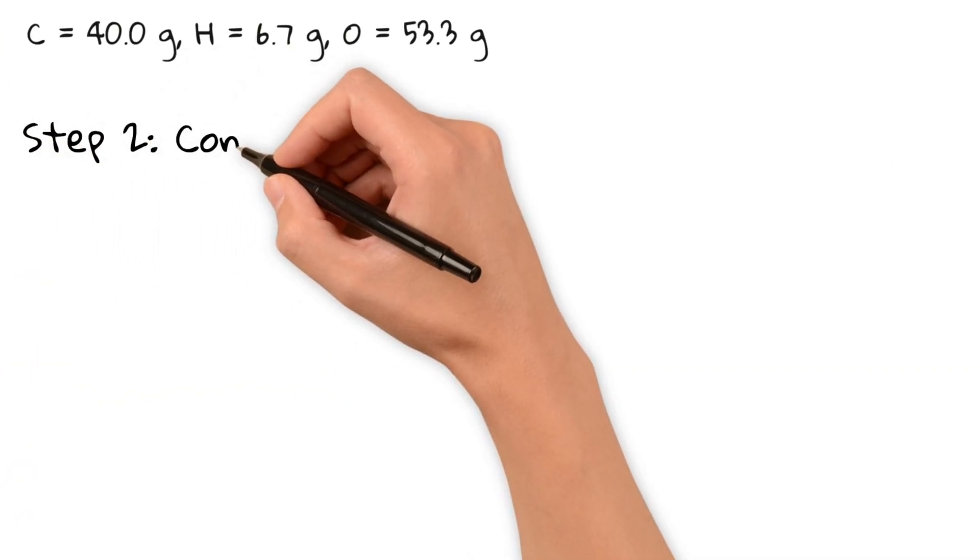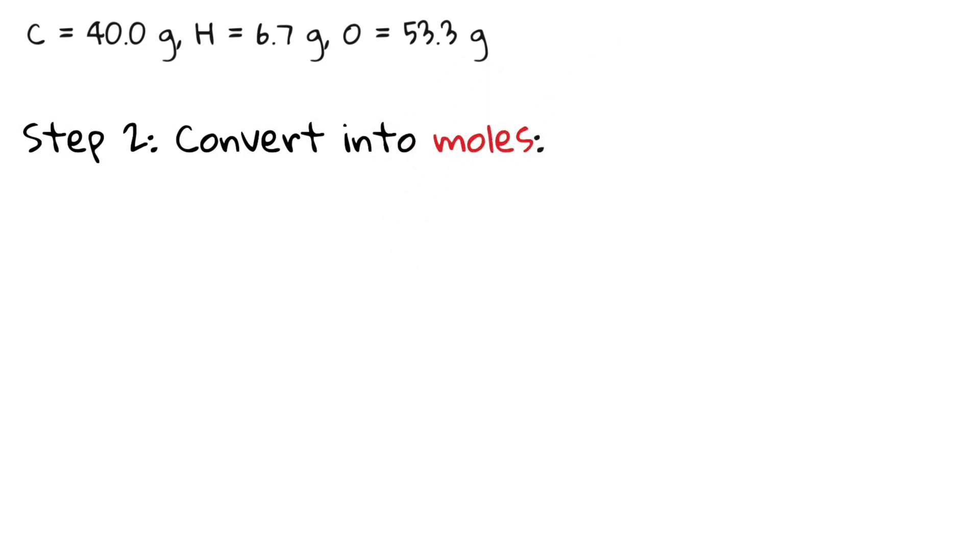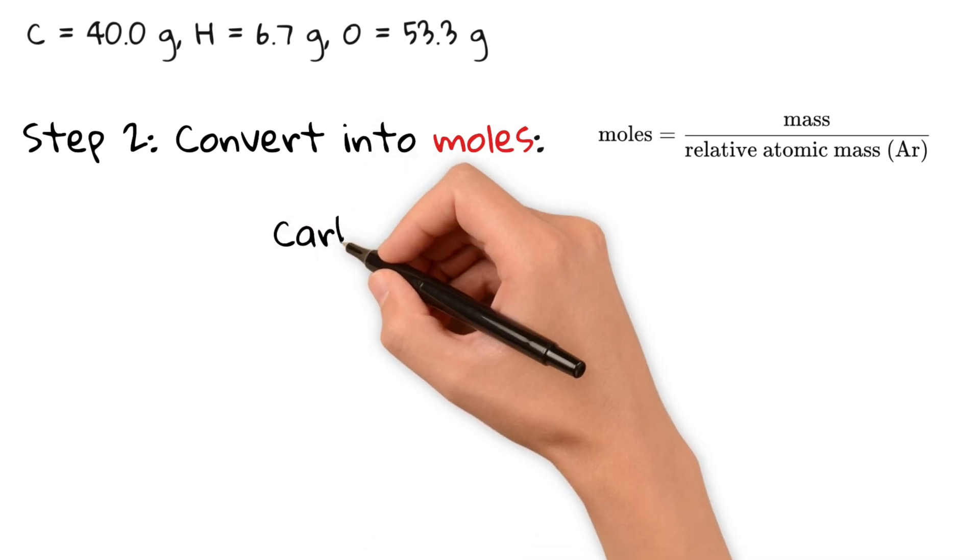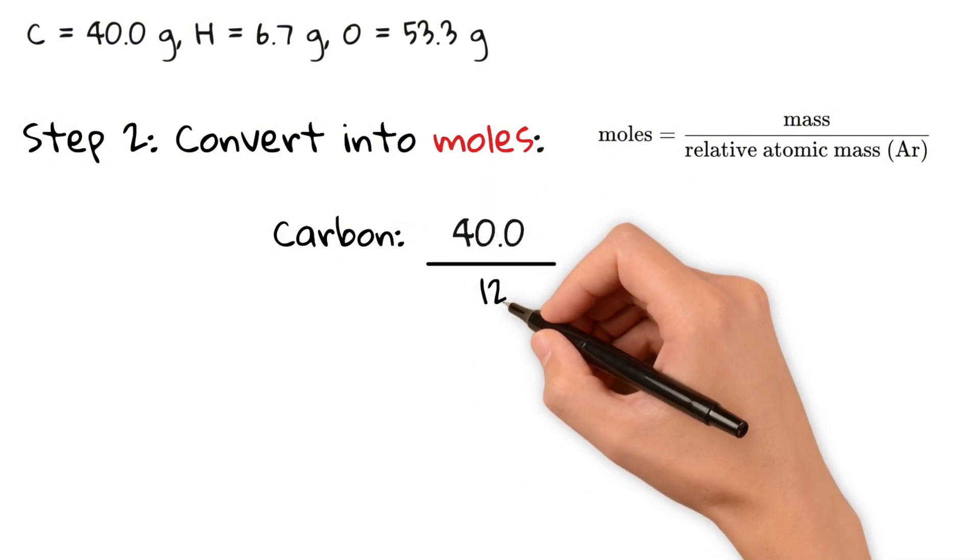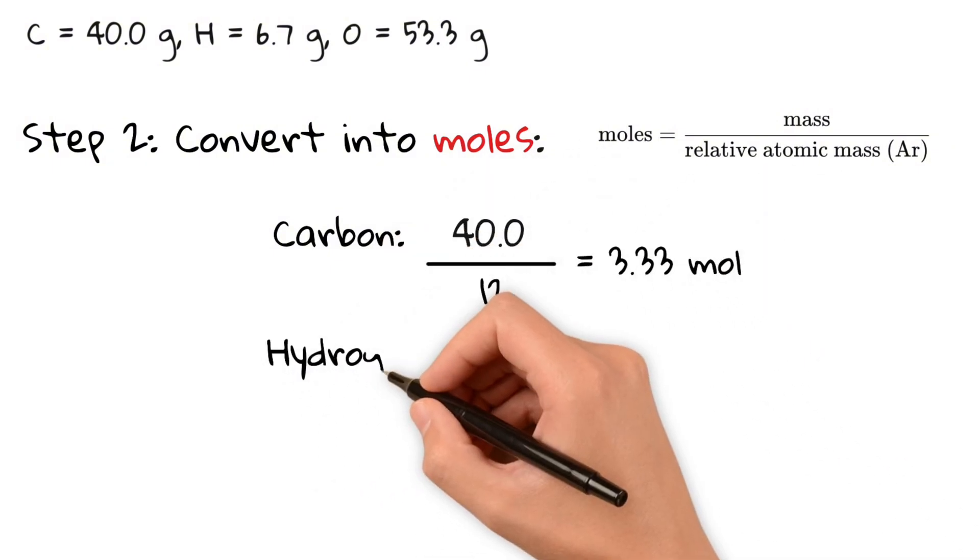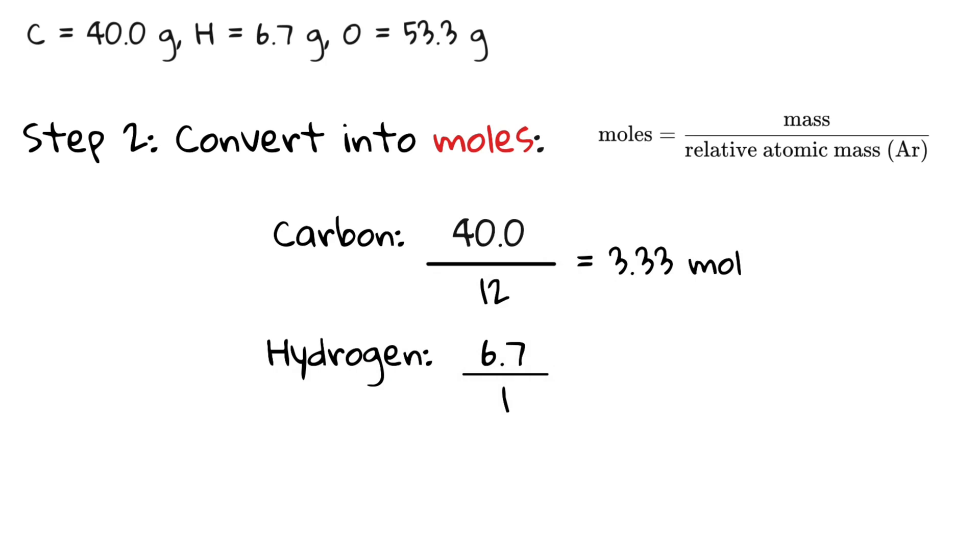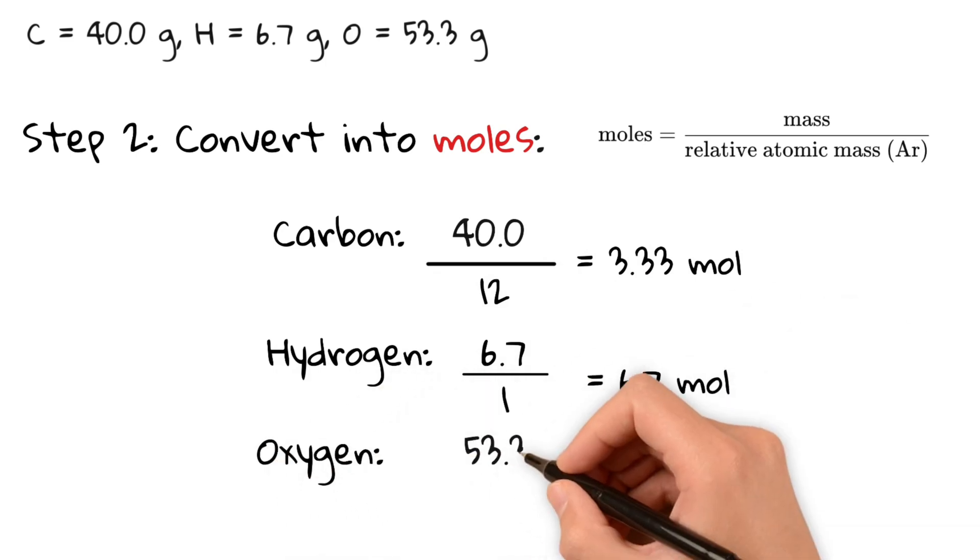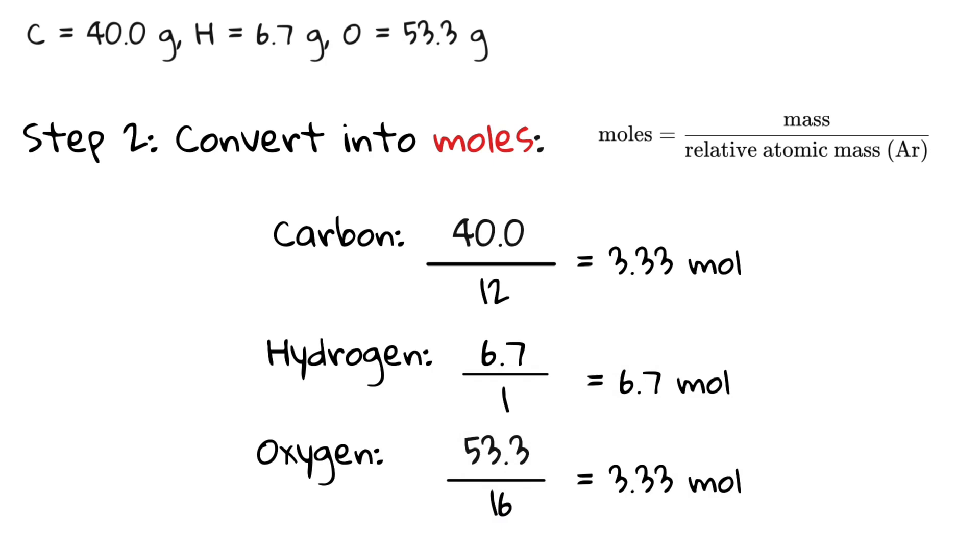The second step is to convert each mass into moles. We are using the formula mole equals mass divided by atomic mass. The atomic masses can be obtained from the periodic table. This gives us 3.33 mole for carbon, 6.7 mole for hydrogen, and 3.33 mole for oxygen.